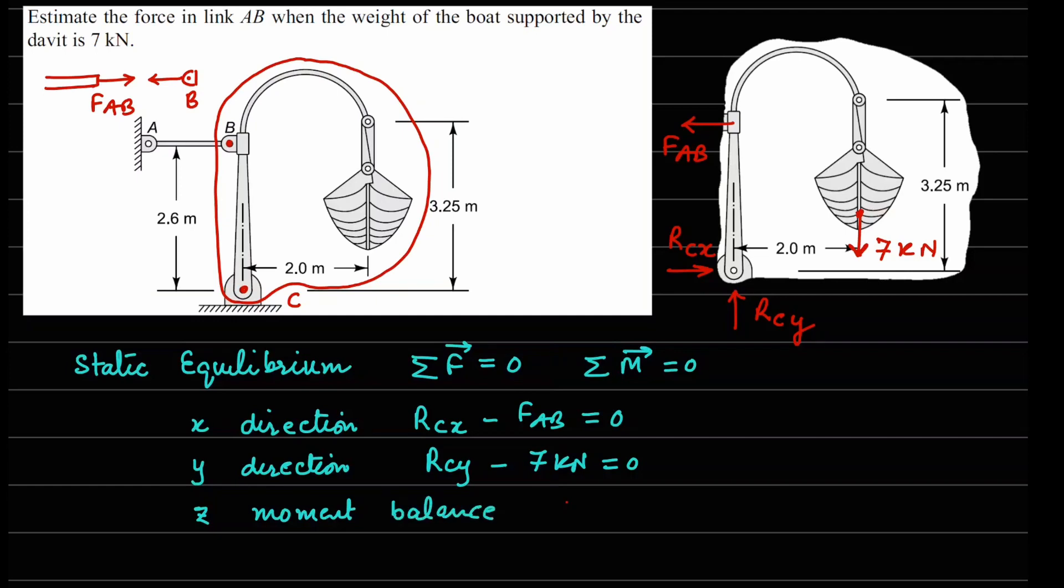And when I do moment balance about point C, you can see the 7 kilonewtons force is acting at a distance of 2 meters, so this will be 7 kilonewtons times 2 meters. This will be a positive moment because it will go in the clockwise direction. RCX and RCY will not give any moment, and FAB about point C will give a moment in the anticlockwise direction. The distance from here to here is 2.6 meters, so this will be minus FAB times 2.6, and since moment should be equal to zero, we can equate this equals to zero.